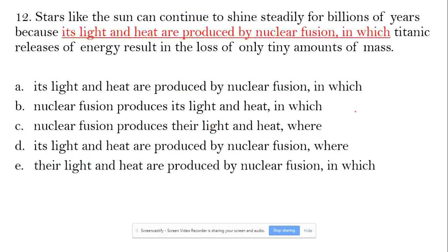Hello, I'm back with one more sentence. Here we go. The sentence starts: Stars like the sun can continue to shine steadily for billions of years because its light and heat are produced by nuclear fusion in which titanic releases of energy result in the loss of only tiny amounts of mass.